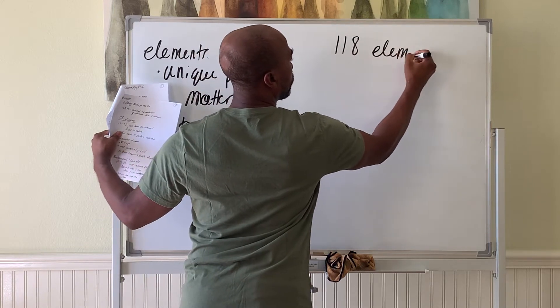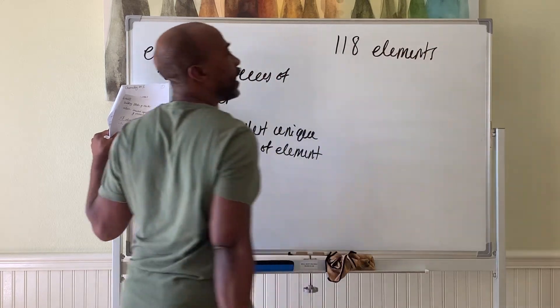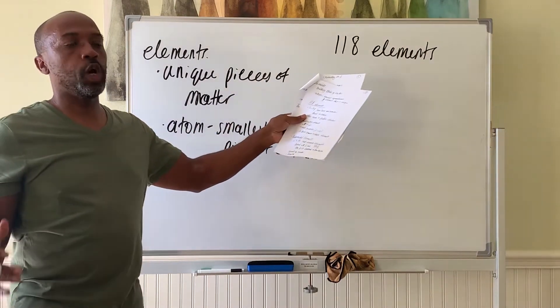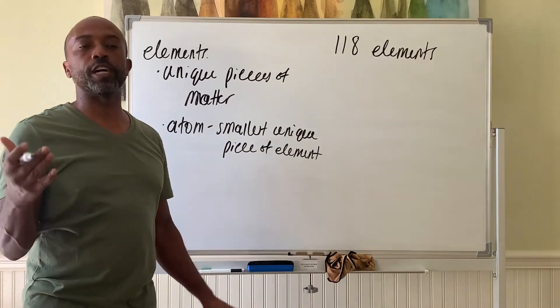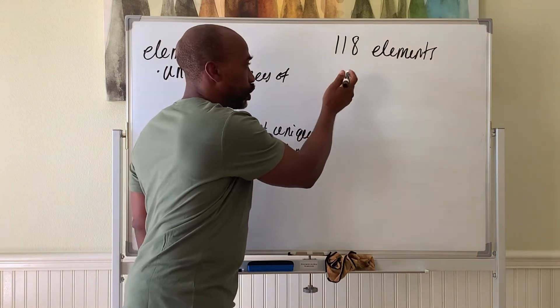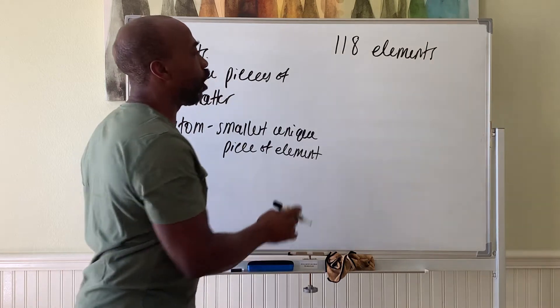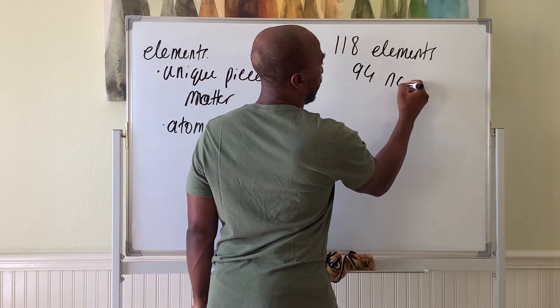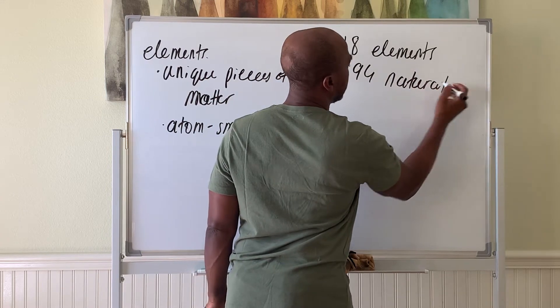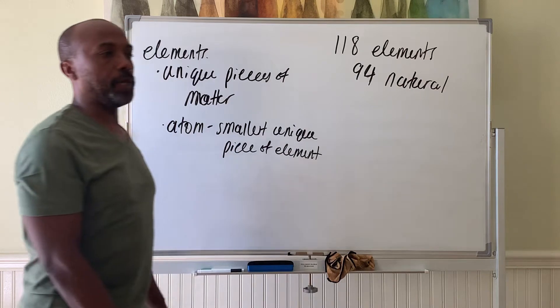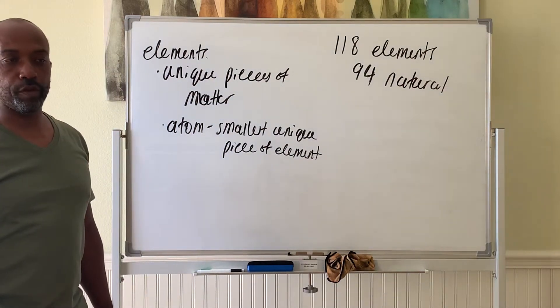There are 118 elements so far arranged in a periodic table. We number them as we discover them. We'll probably find a lot more eventually, but that's all we've managed to find. Of these 118 elements, 94 of them are natural, meaning we have actually found these in nature, maybe in stars, but we've located them.